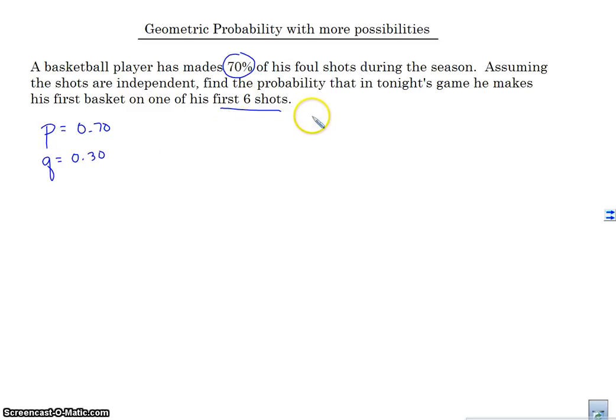Alright, so here's the thing. We've got a few possibilities, right? He can make his first basket on the first shot. He can make it on the second shot, on the third, on the fourth, on the fifth, or on the sixth. So we're going to find the geometric probability of each of these possibilities. And then, these are all or's, right? He can make it on the first, or on the second, or on the third, or on the fourth, or on the fifth, or on the sixth. We're going to add them all together.